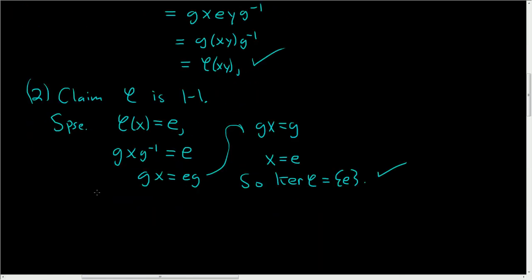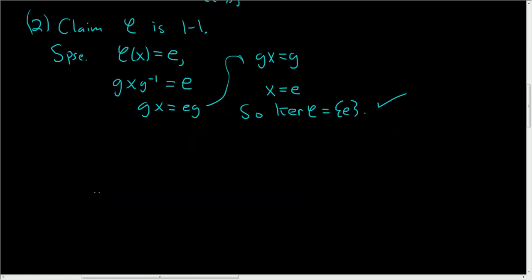The last part is to show that φ is onto. This part is a little bit more work. So claim: φ is onto. So let me go on the side and rewrite what φ was. So φ(x) takes x to the element gxg⁻¹. Okay, so to show that it's onto, we're going to take some y, and we want gxg⁻¹ to be equal to y.